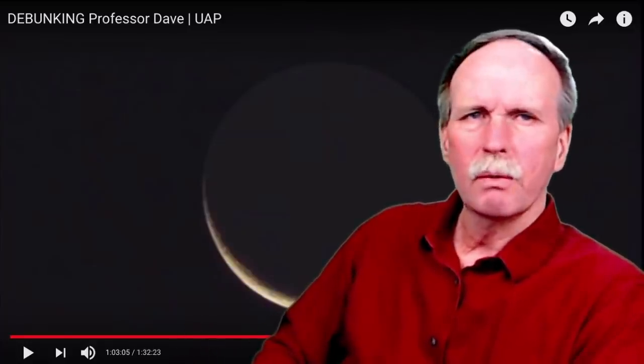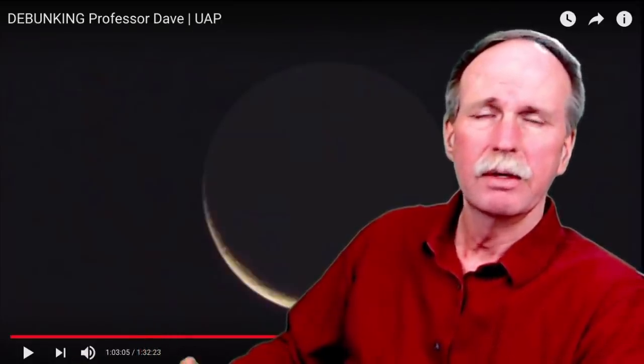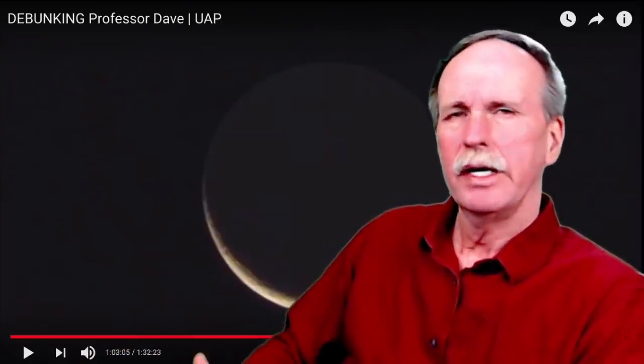In fact, lunar eclipses were one of the first pieces of evidence that the earth itself was a sphere, because it was observed that the shadow of the earth on the moon was always round. And the only geometric shape that will always cast a round shadow is a sphere.